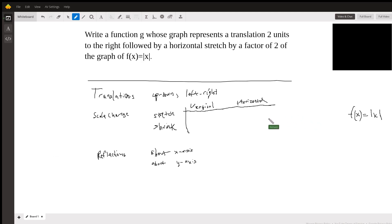The first thing that they want done is they want a translation two units to the right. So that's going to be f of x equals absolute x plus two. I'm sorry, minus two, two units to the right.